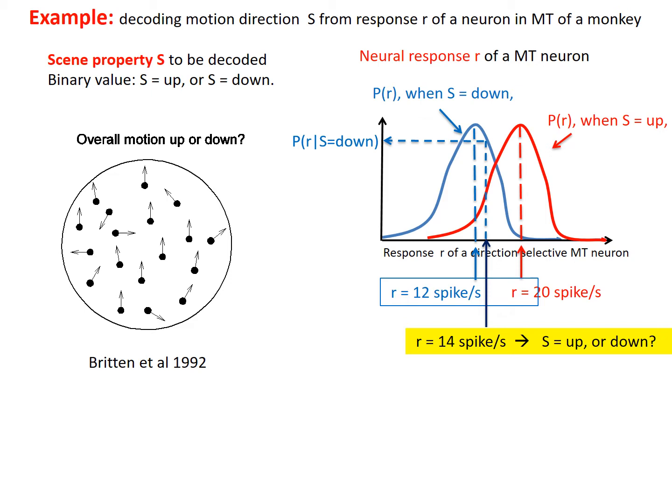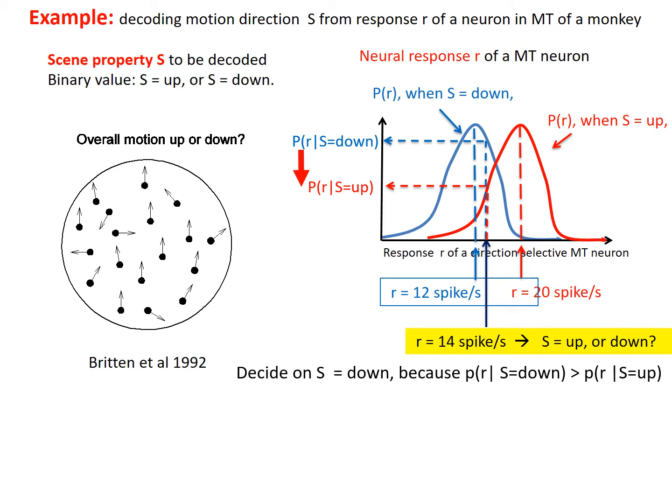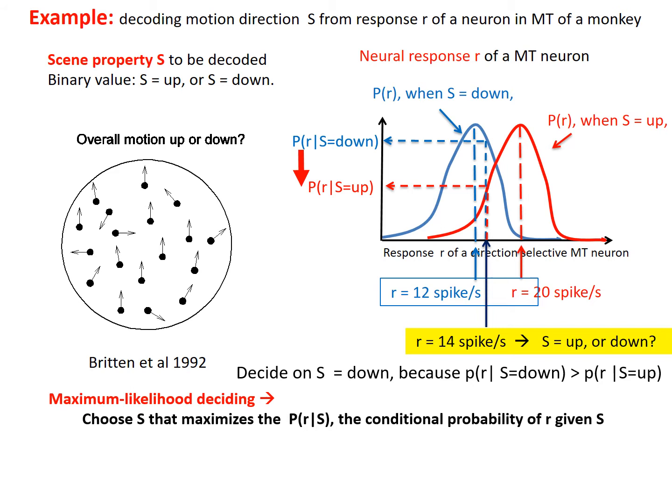A better reasoning of this guess is as follows. If the motion direction was actually downward, then according to this neuron's response properties, this is the probability to generate a response level of 14 spikes per second. If the motion direction was upward instead, then the probability to generate this same response is lower. Therefore, the decoded motion direction is downward. This decoding algorithm is called maximum likelihood decoding.